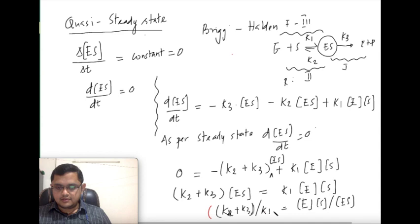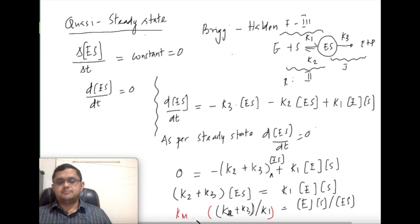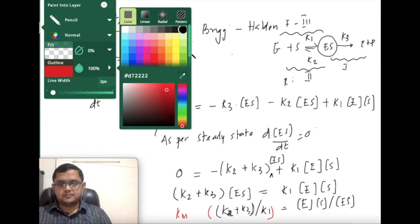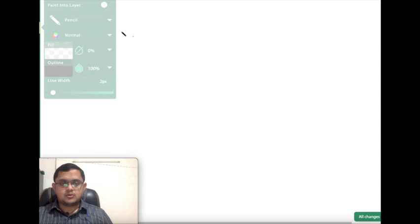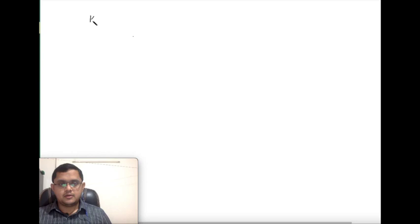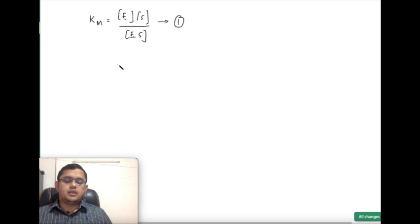Instead of writing (k2 + k3)/k1, I write Km — it is a combination of rate constants and therefore itself a constant. So Km equals [E]·[S] divided by [ES]. This is equation number 1.